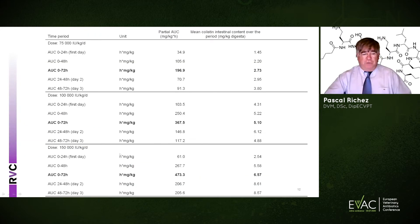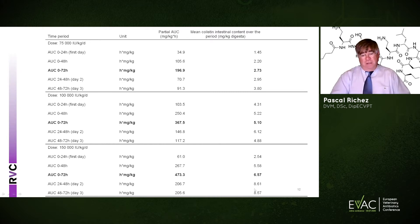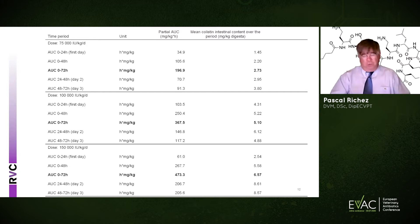If we give 150,000 units, we reach 6 to 9 micrograms per ml. Remember that MCR bacteria can have an MIC as high as 8. So if we give 150,000 units, we are sure — it's never 100% in science, but we are sure — that we will be above the susceptibility level of the so-called resistant strains.